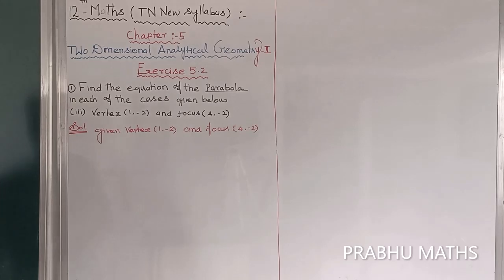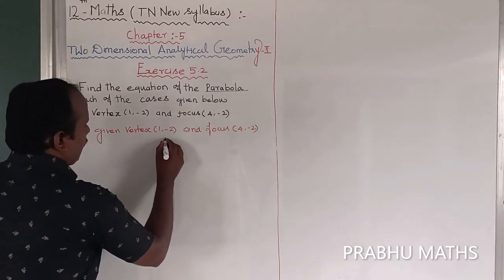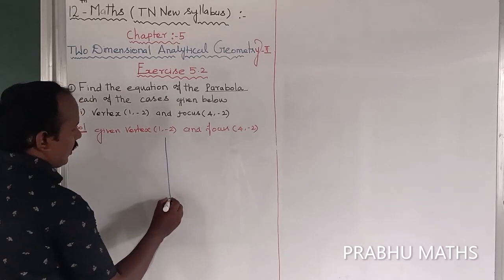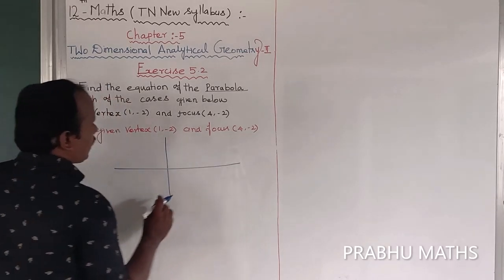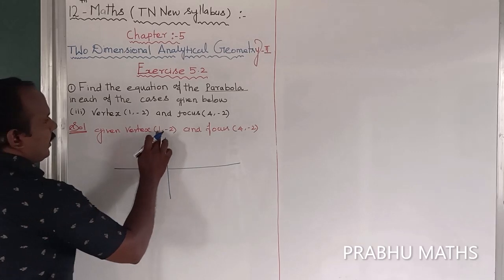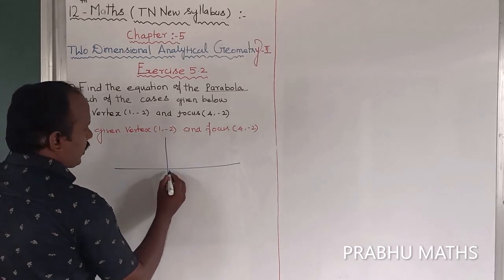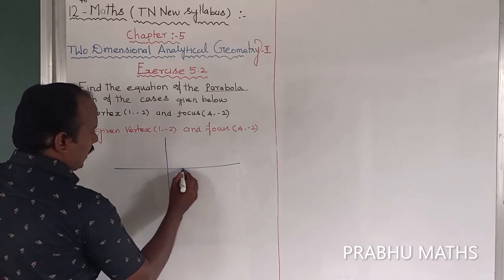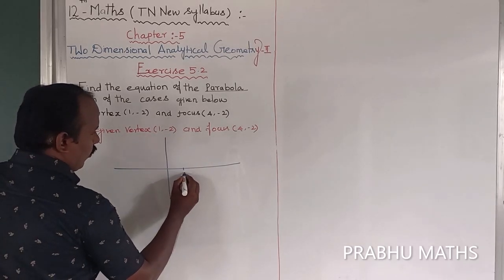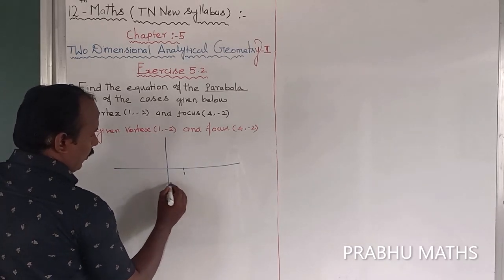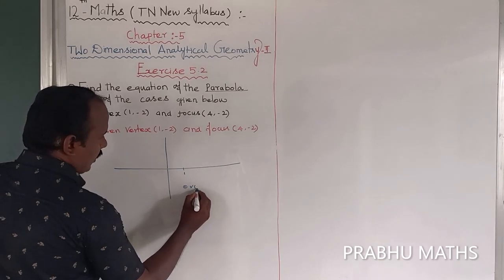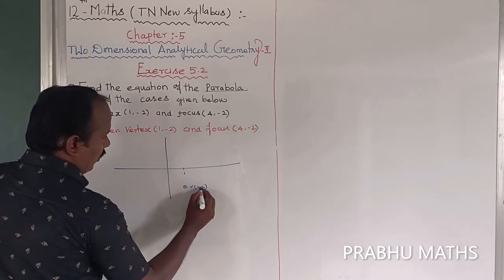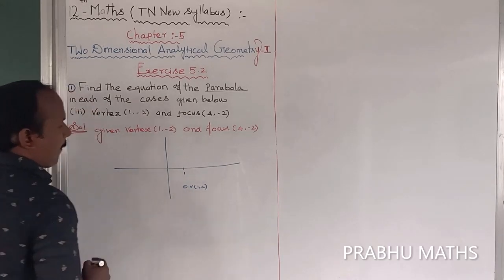First, draw the diagram. Let us take the graph. So this is the graph. Next, vertex (1, -2): 1 is on the positive side, so the vertex point is at (1, -2).